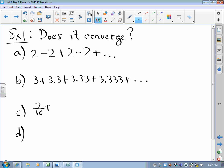We've got seven tenths, plus seven one hundredths, plus seven one thousandths, plus, and so on. The nth term here is seven over ten to the n.